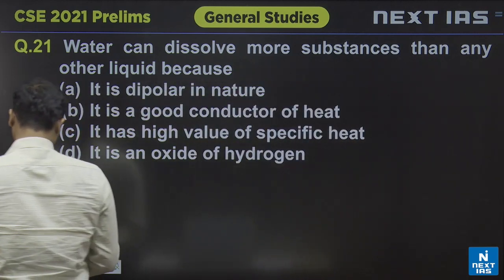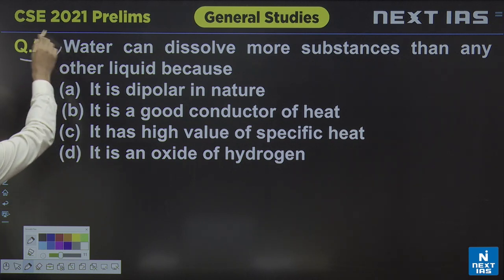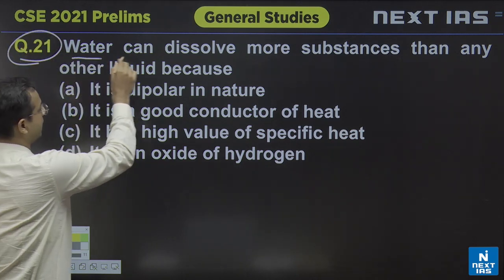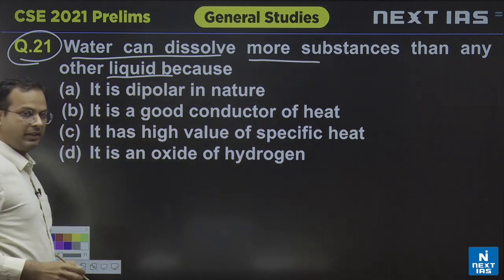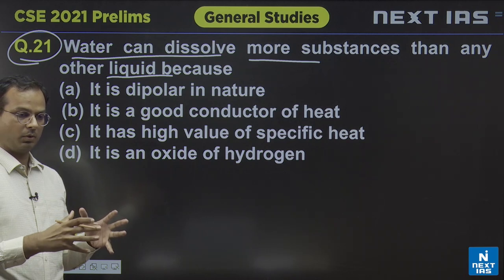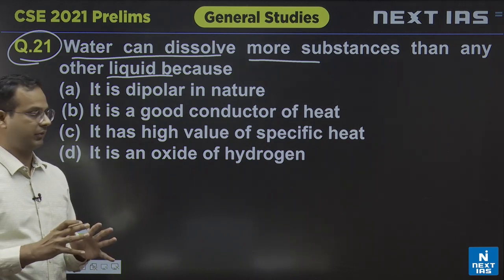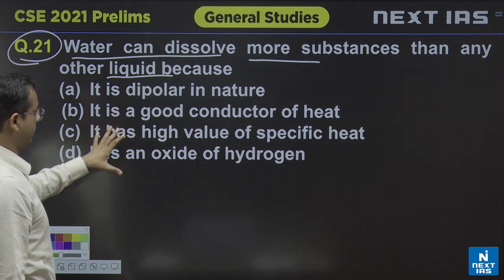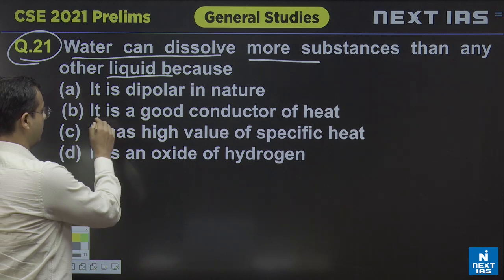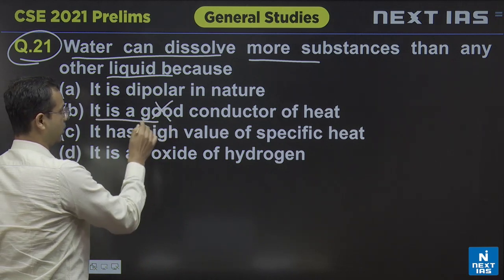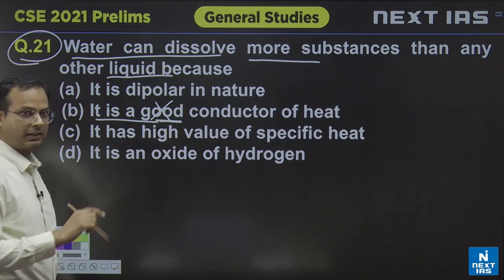The first question from basic science is related to the fact that water can dissolve more substances than any other liquid. It means water can dissolve a lot of substances including ionic substances and even some covalent substances. What is the reason? Even if you do not know the answer, one statement is absolutely wrong: that water is a good conductor of heat. Water is not a good conductor of heat — water is actually a bad conductor of heat.